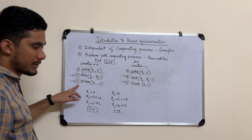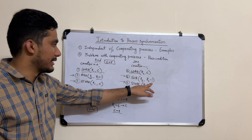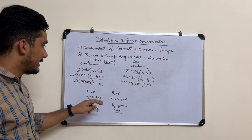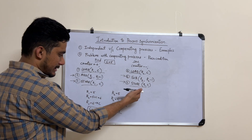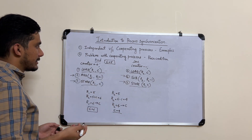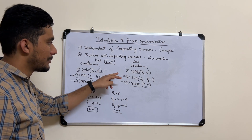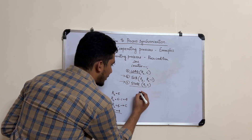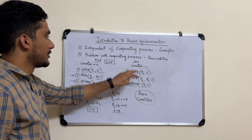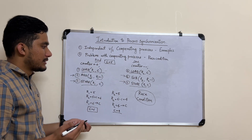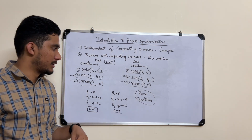The final value depends on which store runs last — it could be 6 or 4, both of which are wrong. Since we incremented and then decremented, the value should have remained 5. This situation where the outcome depends on which process runs last is called a race condition, and it is the major issue with cooperating processes that lack coordination. We'll see how to avoid race conditions in future videos.